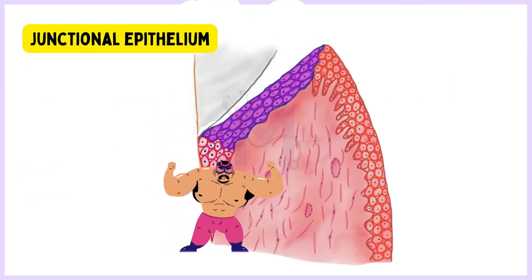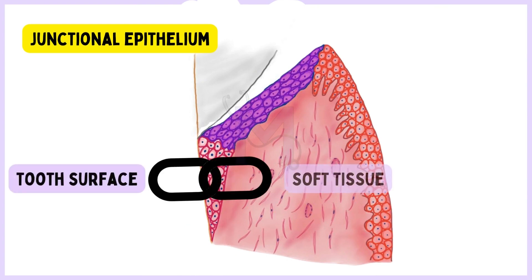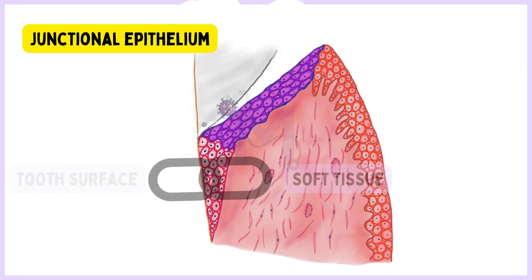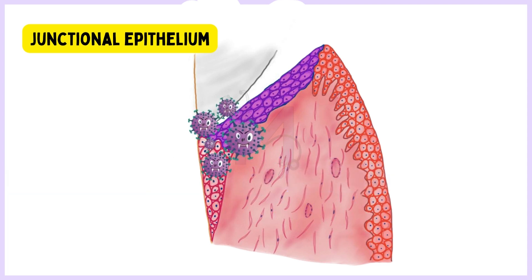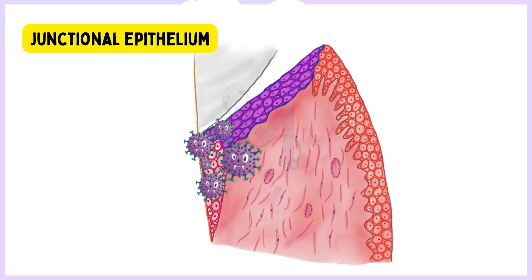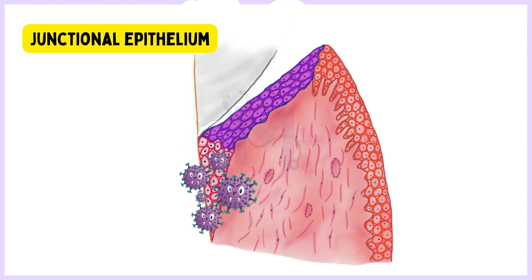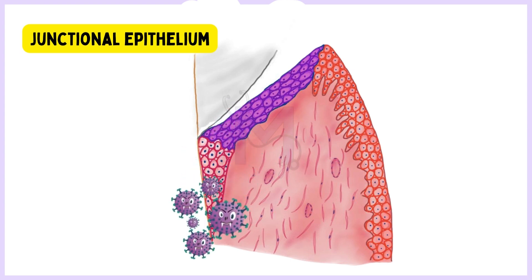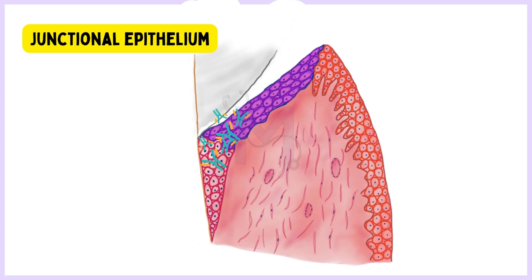The junctional epithelium assumes a key role in maintenance of periodontal health. It produces the epithelial attachment and therefore creates a firm connection of soft tissue to the tooth surface. It is quite permeable and thus serves as a pathway for diffusion of metabolic products of the plaque bacteria like toxins, chemotactic agents and antigens. There is also diffusion in the opposite direction of host substances like serum exudates, antibodies, etc.